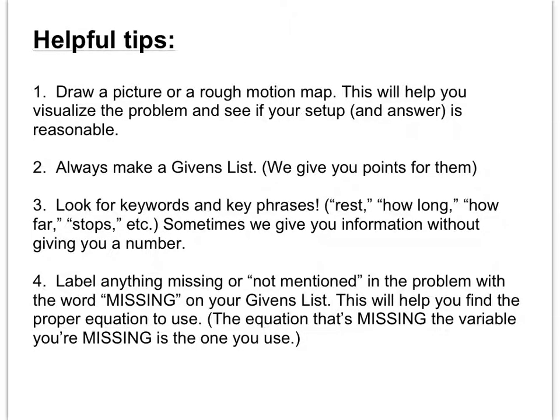Last thing is also always label something that's missing or not mentioned in the problem with the word missing in our givens list. Okay, this is extremely important because one confusing thing is that most students don't know which equation to use. But if you find that something's not mentioned in the problem, that will help you identify the equation because the equation you want is the thing that's missing the variable that we don't have. Okay? Now, this does take some practice to get used to, but that's like everything in this class. So keep up at it and we'll talk in class.